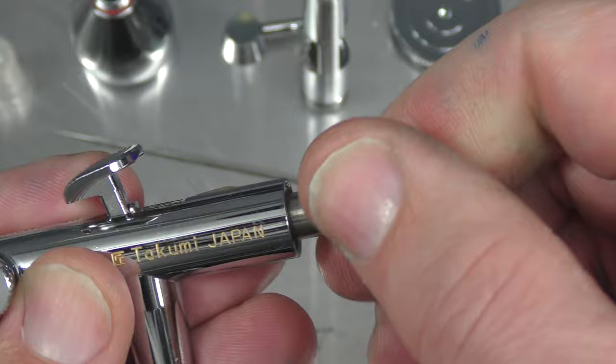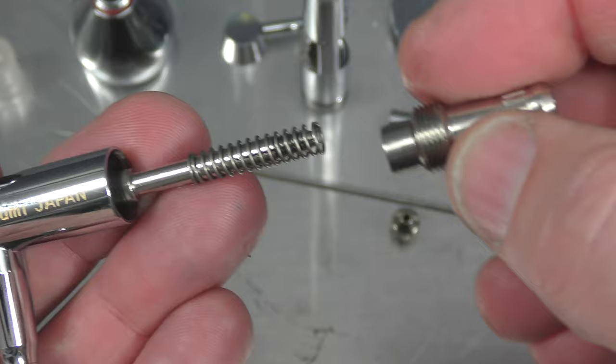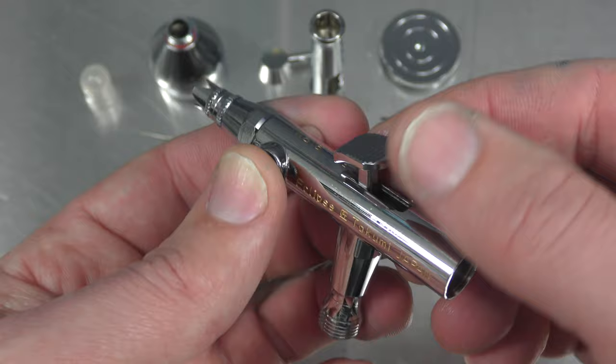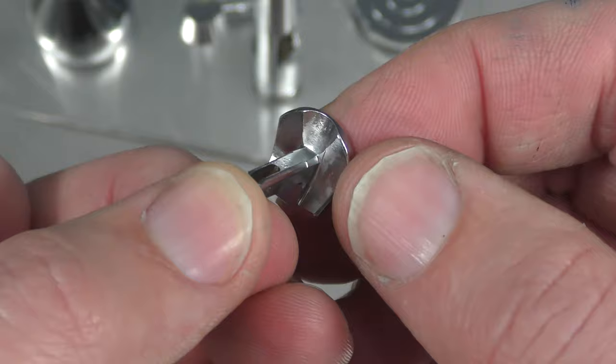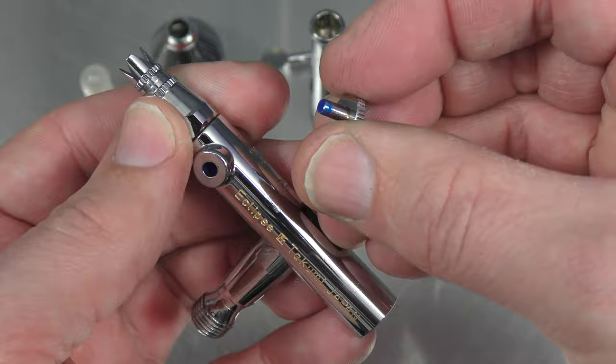Then loosen this part here, the needle chucking guide and then you'll see the spring that I was talking about earlier. There it is there and this part which sits up against your trigger. Now that that's all out you can remove the trigger. You can see this is one of those triggers where this part is attached so this can be more difficult to put in and also keep in mind that that little notch there indicates the back. Now just remove this. That just comes out the little lug. You can see there's still some paint there.